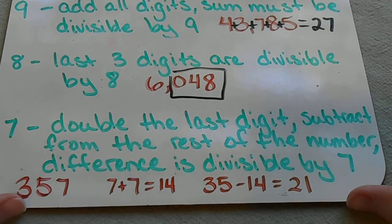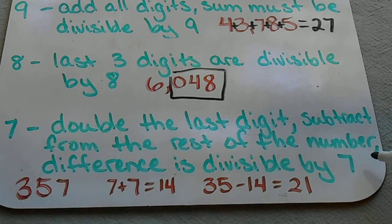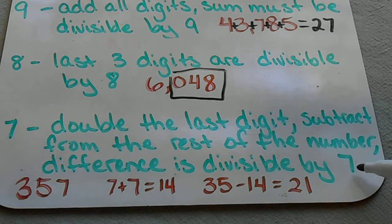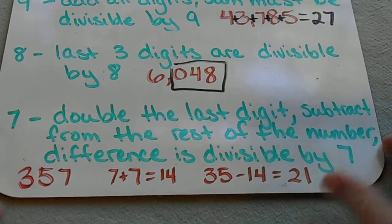Our test for 7 is to double the last digit, subtract it from the rest of the number, and then if that difference is divisible by 7, then your big number is divisible by 7. I wrote out a little example here for you.